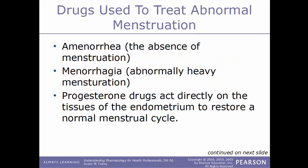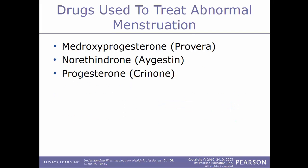Drugs used to treat abnormal menstruation include treatment for amenorrhea (absence of menstruation) and menorrhagia (abnormally heavy menstruation). Progesterone drugs act directly on the tissues of the endometrium to restore a normal menstrual cycle. Examples include medroxyprogesterone (Provera), norethindrone (Aygestin), and progesterone (Crinone).